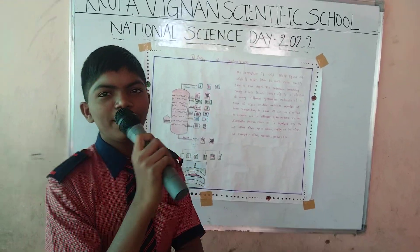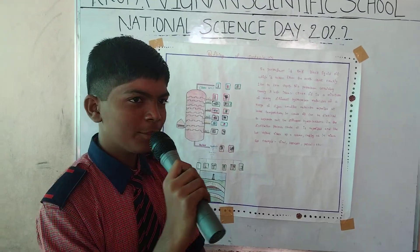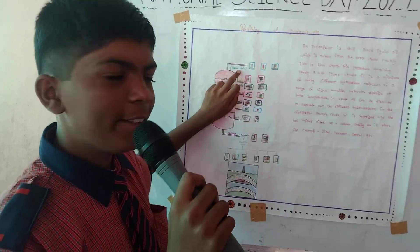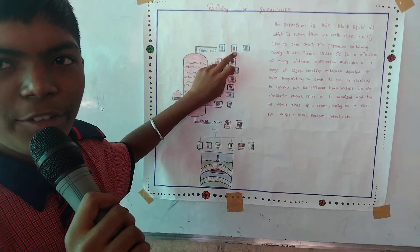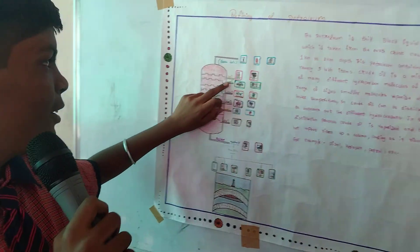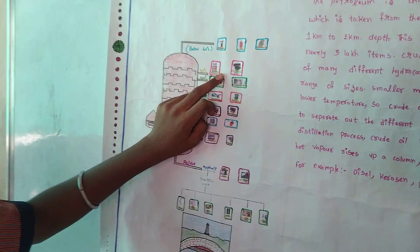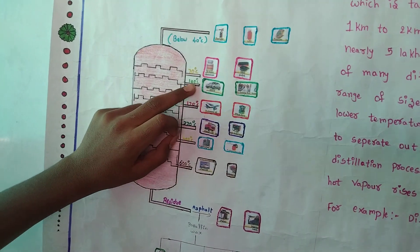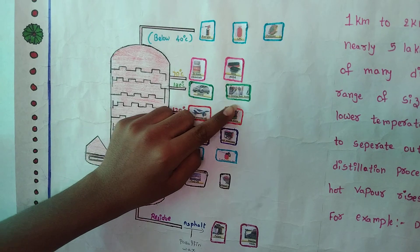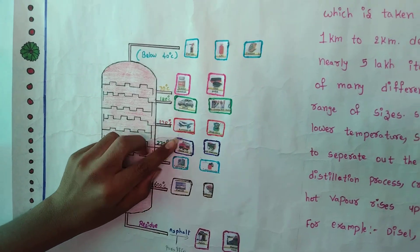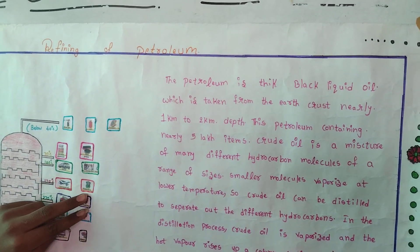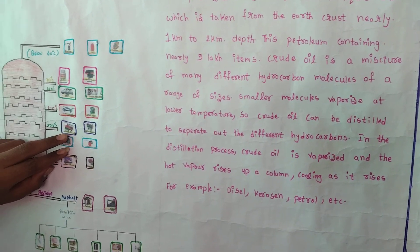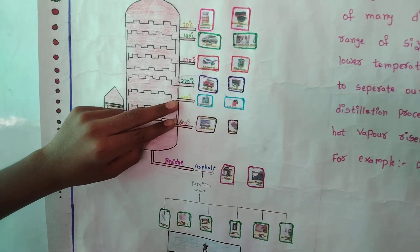My project work is the distillation of petroleum. This is a tank. Below 40 degrees: fuel gas, LPG, fertilizer. At 70 degrees: chemicals for shoe polish. At 120 degrees: petrol, light naphtha. At 170 degrees: kerosene oil for stoves. At 270 degrees: diesel oil, diesel generator.